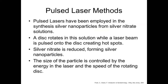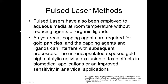Another process to make materials is the pulsed laser method. Pulsed lasers have been employed to make silver nanoparticles from silver nitrate solutions. A silver disc rotates in a solution while a laser beam is pulsed with energy to create hotspots on the disc. As the silver nitrate is reduced, this forms silver nanoparticles chemically. The size of the nanoparticles is controlled by the energy of the laser and the rotating disc speed — essentially applied energy dwell time per unit area.